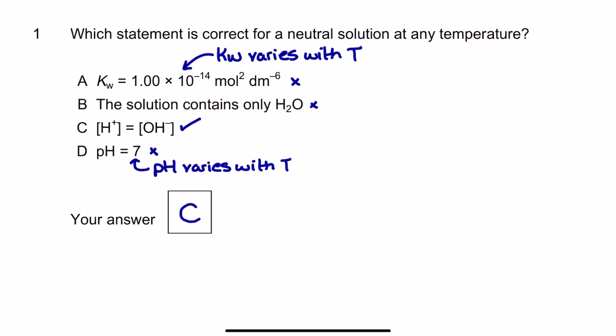It's time to move on to the exam questions, and this first one is a multiple choice question. We're being asked which statement is correct for a neutral solution at any temperature, and straight away I'm going to get rid of options A and D. Because of the material I've already covered in this tutorial, KW is definitely going to vary with temperature, and we know that the pH is going to vary because the KW is varying with temperature. So absolutely we're going to get rid of A and D.